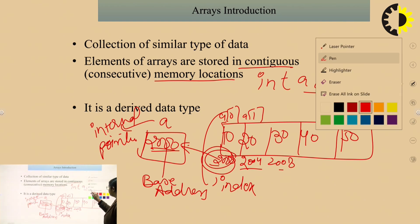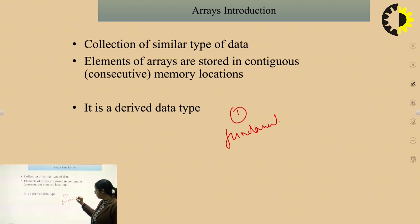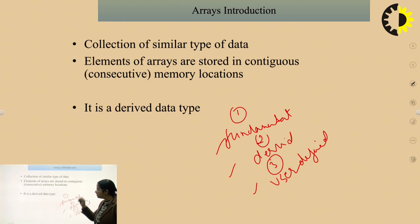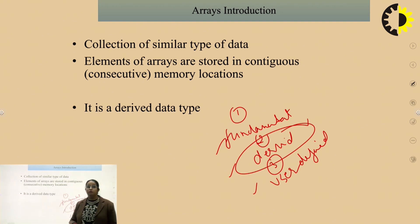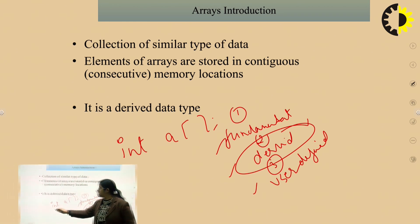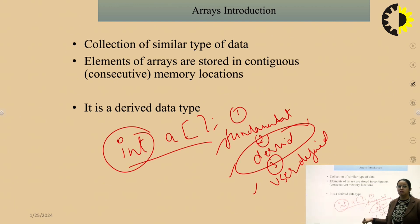The third point is that array is a derived data type. Data types are of three categories: fundamental data type, derived data type, and user-defined data type. Arrays fall under the derived data type category. They are derived from primitive data types — for example, when declaring 'int a[]' we use the primitive data type int, and since we use it for an array, it becomes a derived data type.